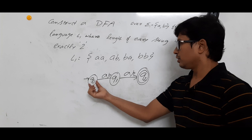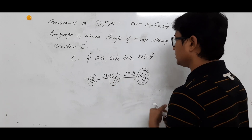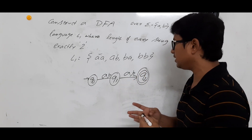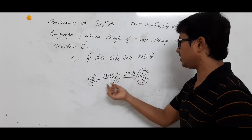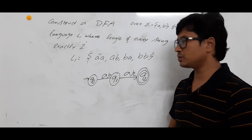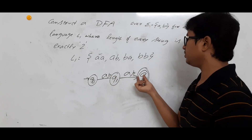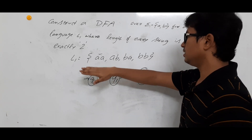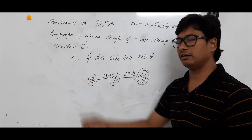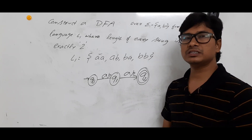So from q0 on 'aa' you reach q2 — 'aa' is accepted. On 'ab': from q0 on 'a' go to q1, from q1 on 'b' go to q2 — 'ab' is accepted. On 'ba': from q0 on 'b' go to q1, from q1 on 'a' go to q2 — 'ba' is accepted. On 'bb': q0 on 'b' to q1, q1 on 'b' to q2 — 'bb' is accepted. Now we need to check whether the DFA construction is complete.